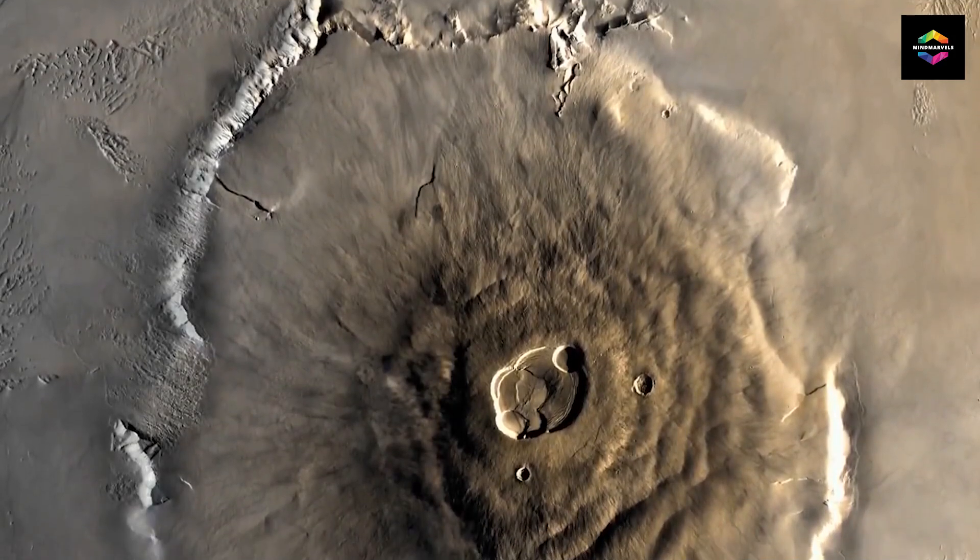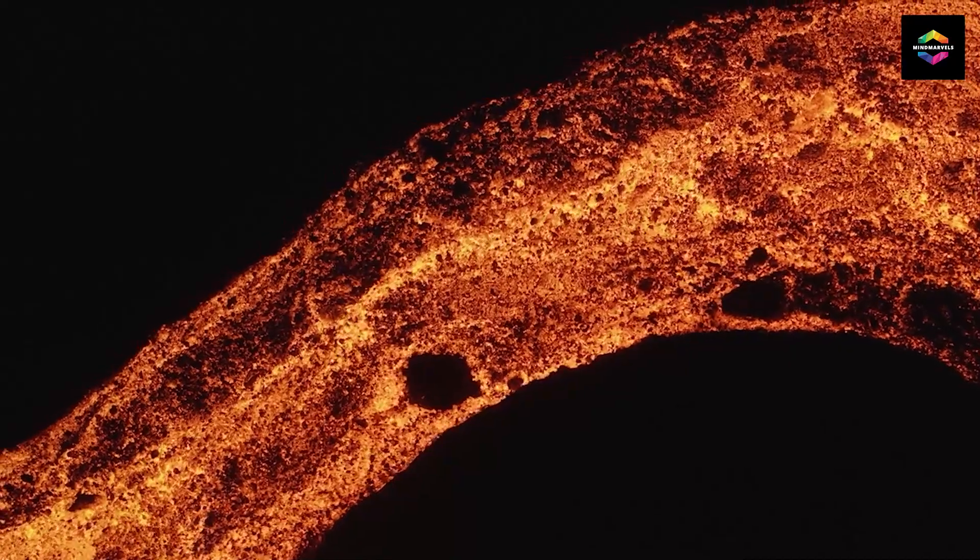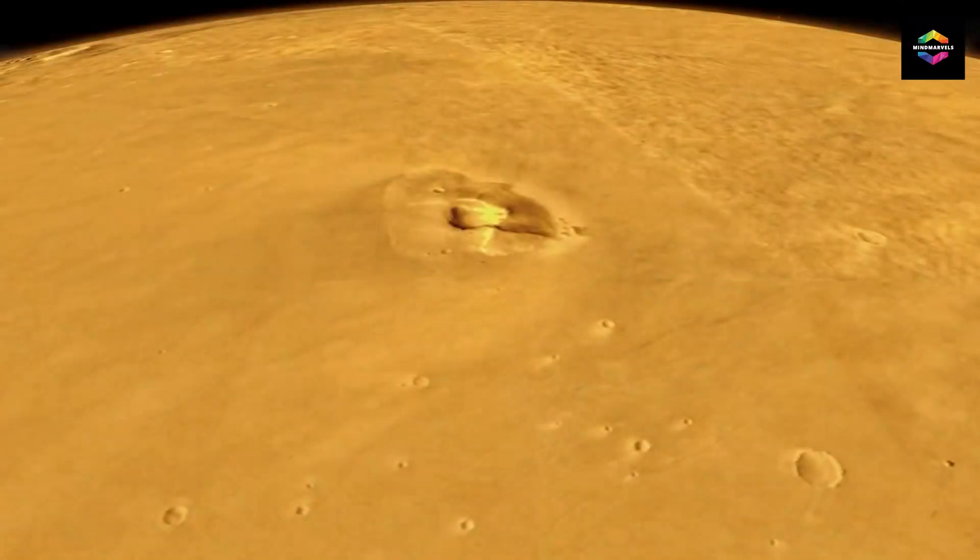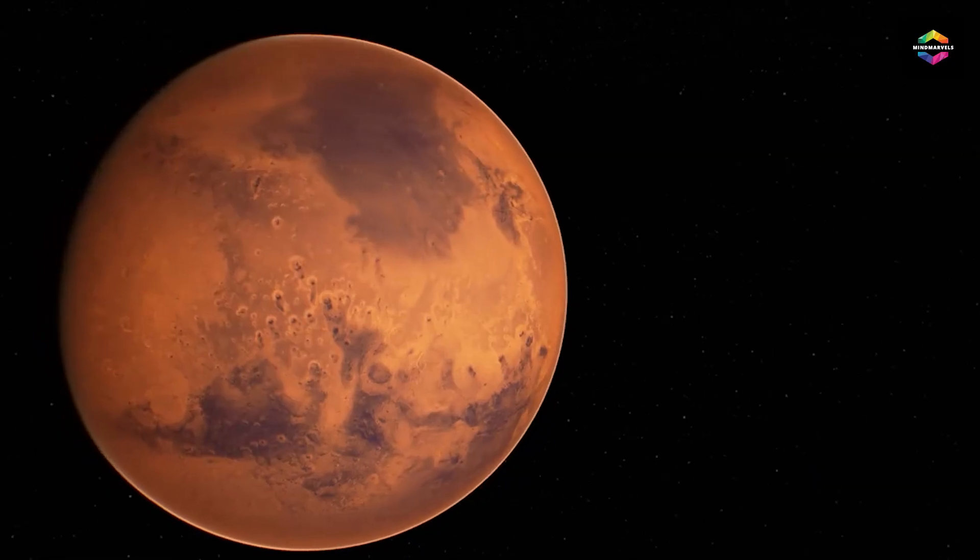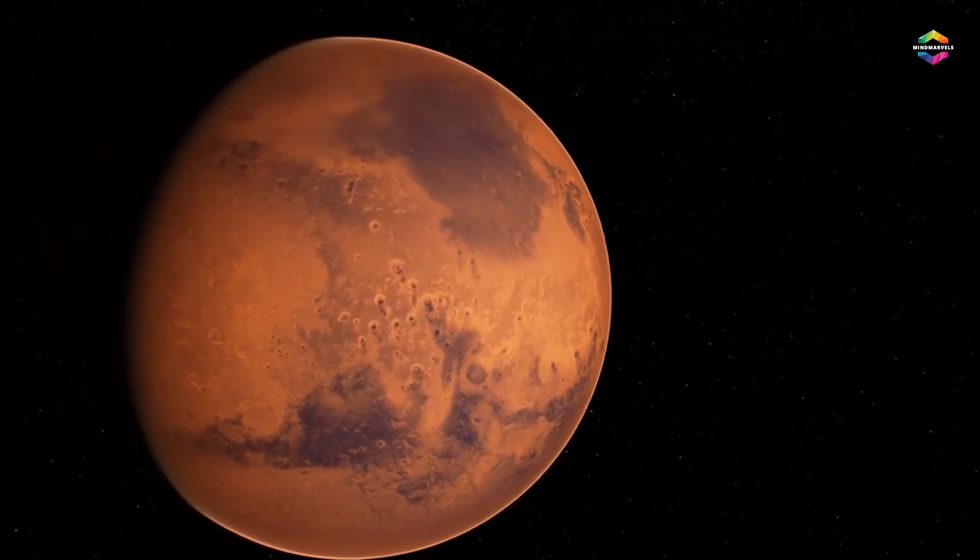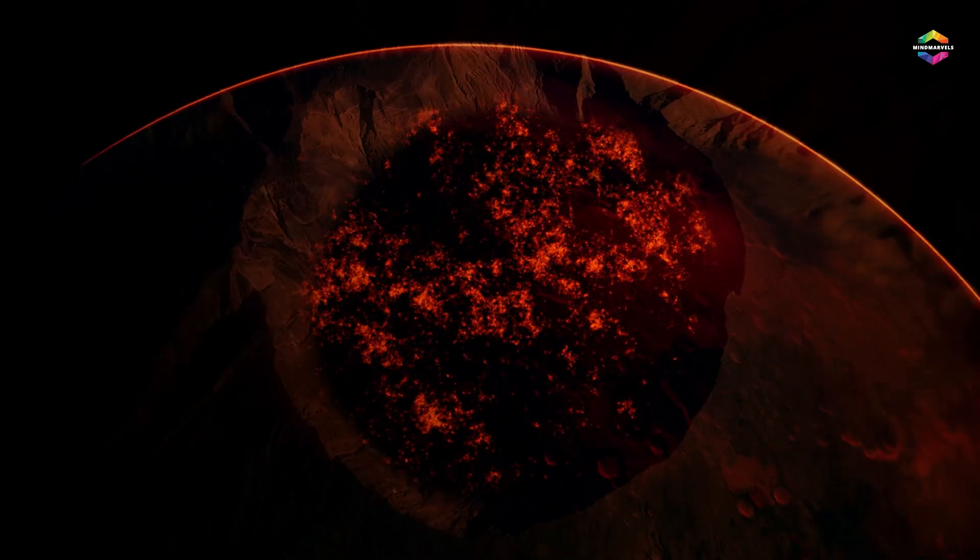Olympus Mons is a shield volcano that formed over billions of years as lava flowed out of the volcano and created a wide, gentle slope. The mountain is so big that it causes a visible bulge on the surface of Mars, and its size has led scientists to suspect that Mars may still be volcanically active.